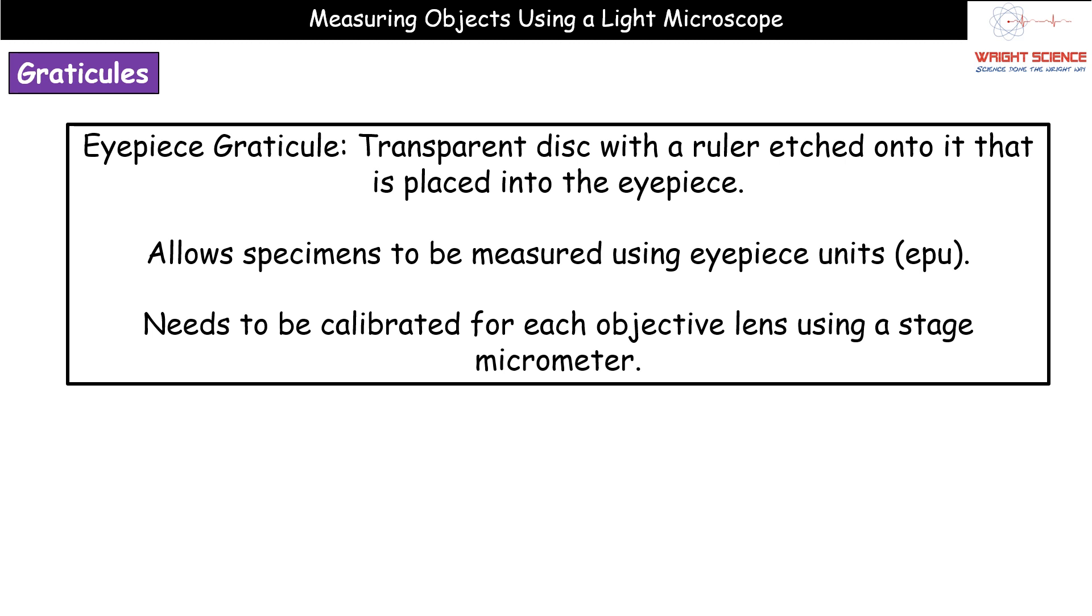As the name suggests from eyepiece graticule, we're going to place that into the eyepiece. What we then have with this little ruler is basically this little scale that's got all these little graduations running through it. That's going to be placed inside the eyepiece itself and these measurements will give us a value in eyepiece units. It doesn't have something like millimeters or anything like that and we'll see why as we go through this video. Each of these little graduations we'd refer to as an individual eyepiece unit.